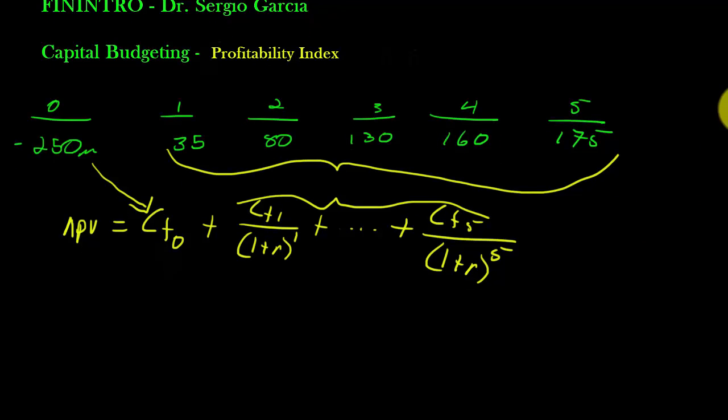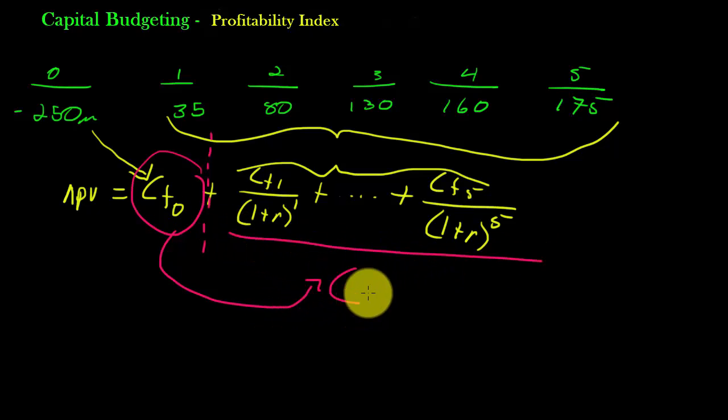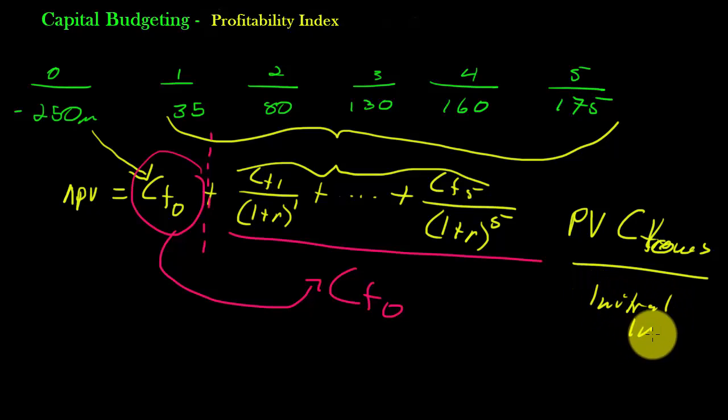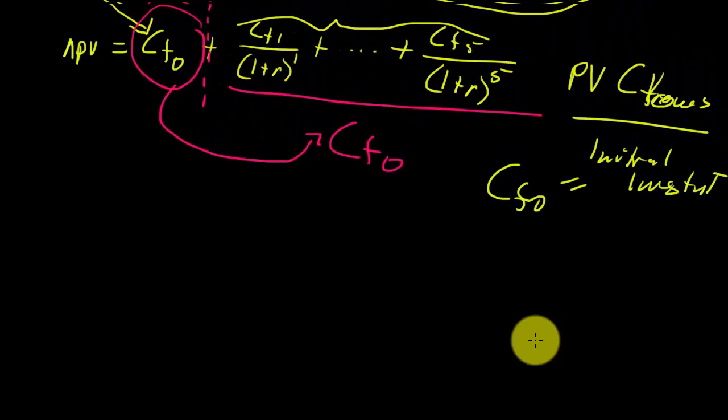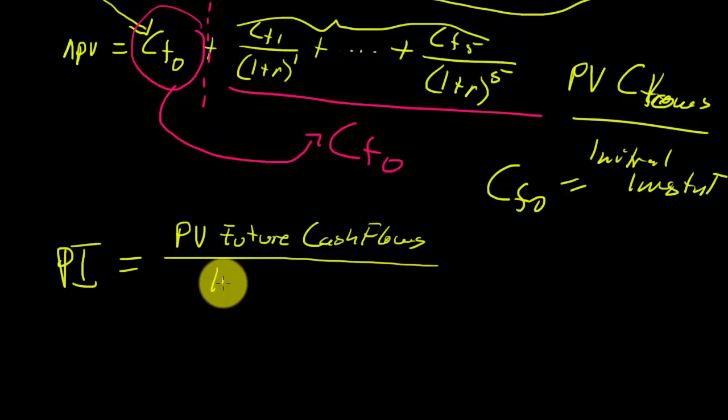But the profitability index is going to give us a better idea of what one looks like compared to the other. And what we're going to do is we're going to separate these cash flows right through here. We're creating a ratio. So my profitability index is equal to nothing more than the present value of my future cash flows, divided by my initial investment.